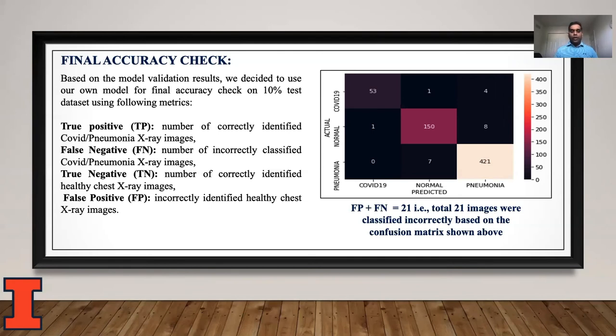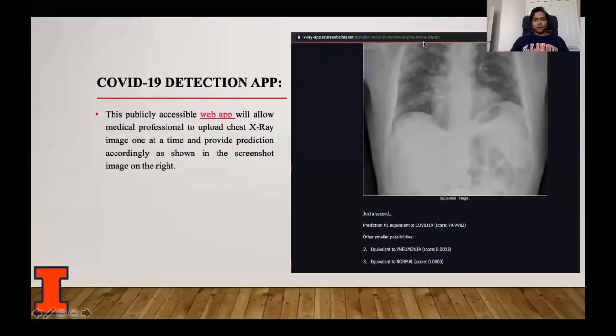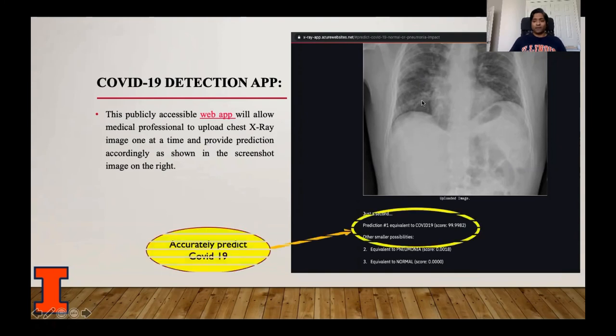That's all I have with the evaluation techniques we applied. Now, Sam will walk us through the remaining slides. Thank you, Raj, for walking us through the model evaluation phase and the final model accuracy check. In order to make our model reusable and sustainable in future, we decided to build a web app. This COVID-19 detection app is publicly accessible and it will allow medical professionals to upload chest X-ray image one at a time and provide a prediction accurately. As you can see in the picture on the right, this chest X-ray image was accurately classified as COVID-19 disease patient.